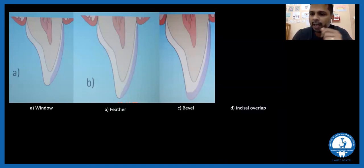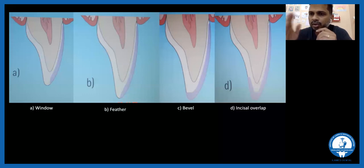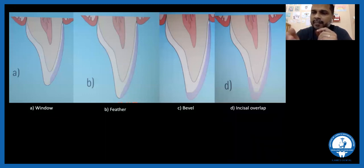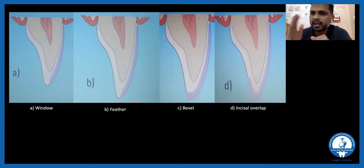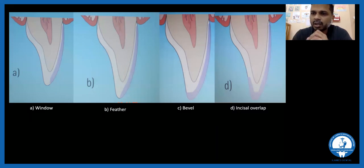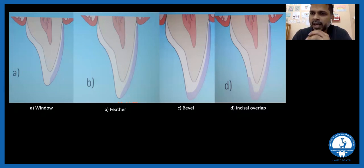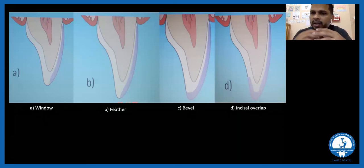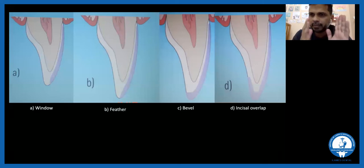In an incisal overlap preparation, you cross the labial surface toward the palatal side and stop at a margin on the palatal side. You can do any of these preparations for veneers. Basically, it covers the labial side of the tooth, and depending on the patient's bite, translucency requirements, and correction needed, you may move from one technique to another.